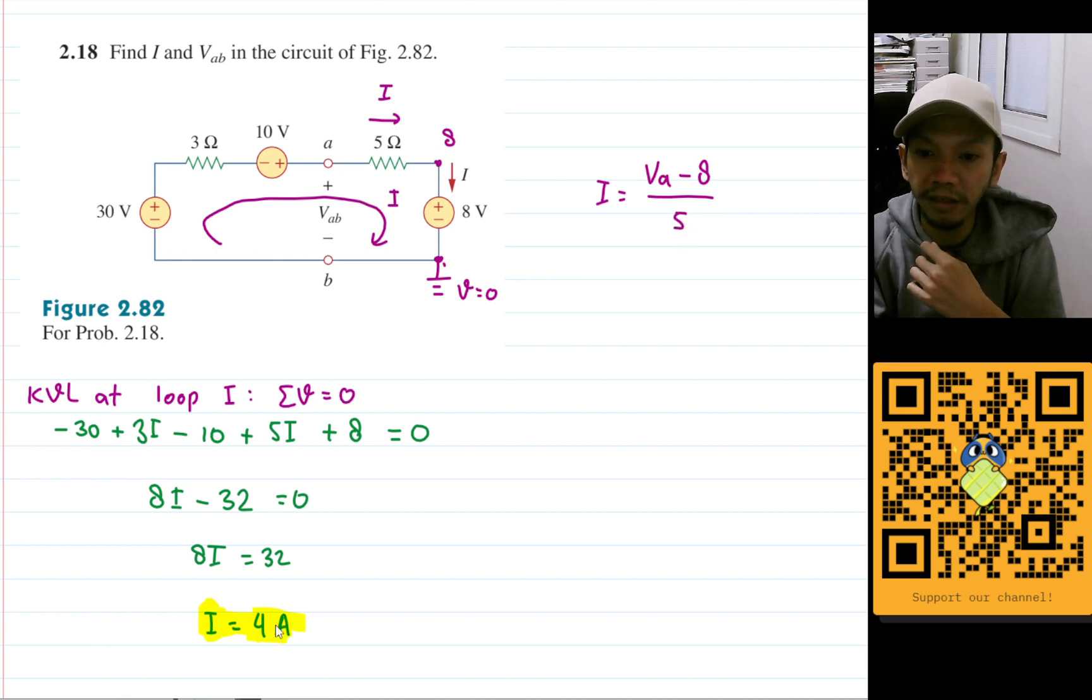But now we will have I is 4, so 4 equals Va minus 8 divided by 5. Let's multiply both sides by 5, so I will have 20, and this one will be Va minus 8. So we'll get Va will equal to 28 volts.